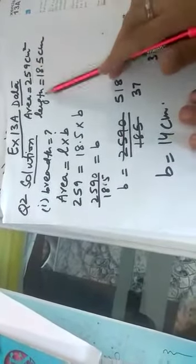Alright, now you have to first make a data like this: breadth you have to find out, and the area is given to you which is 259 and length is given to you. Use the formula area equals length into breadth because they are talking about the rectangle.